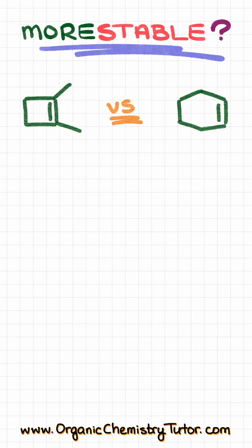Which of these two alkenes is more stable? Well, we know that, generally speaking, an alkene with four substituents is going to be more stable than an alkene with three substituents, which in turn is more stable than an alkene with two substituents, which in turn is more stable than an alkene with only one substituent on it.